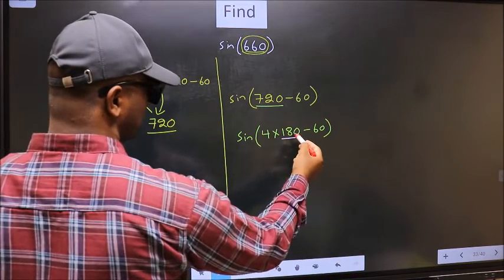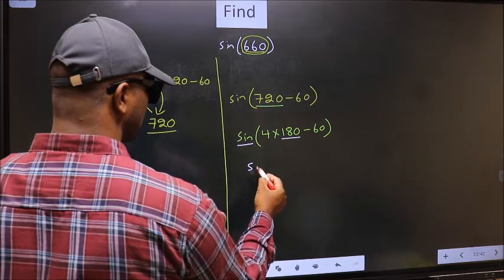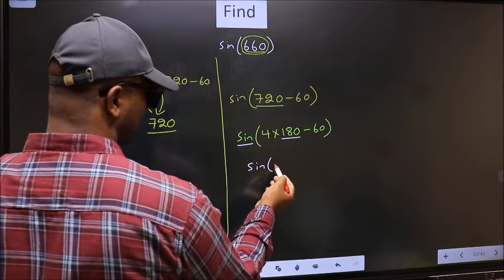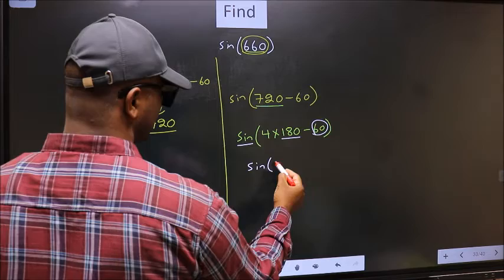Next. Here we have 180. So sin is not going to change. It will remain sin. And inside, we get this angle 60.